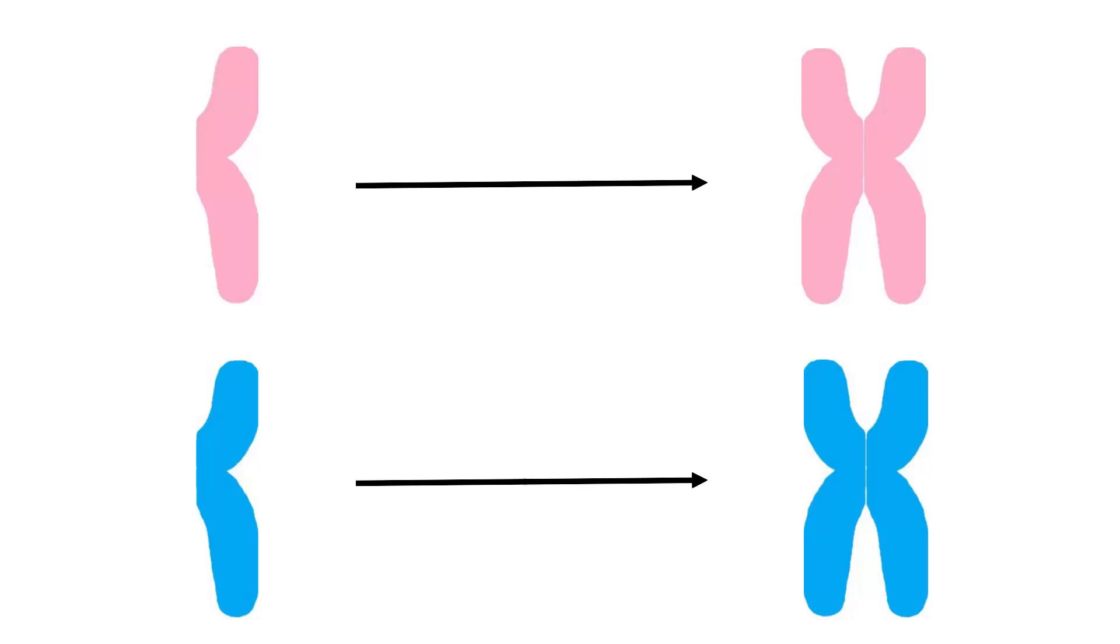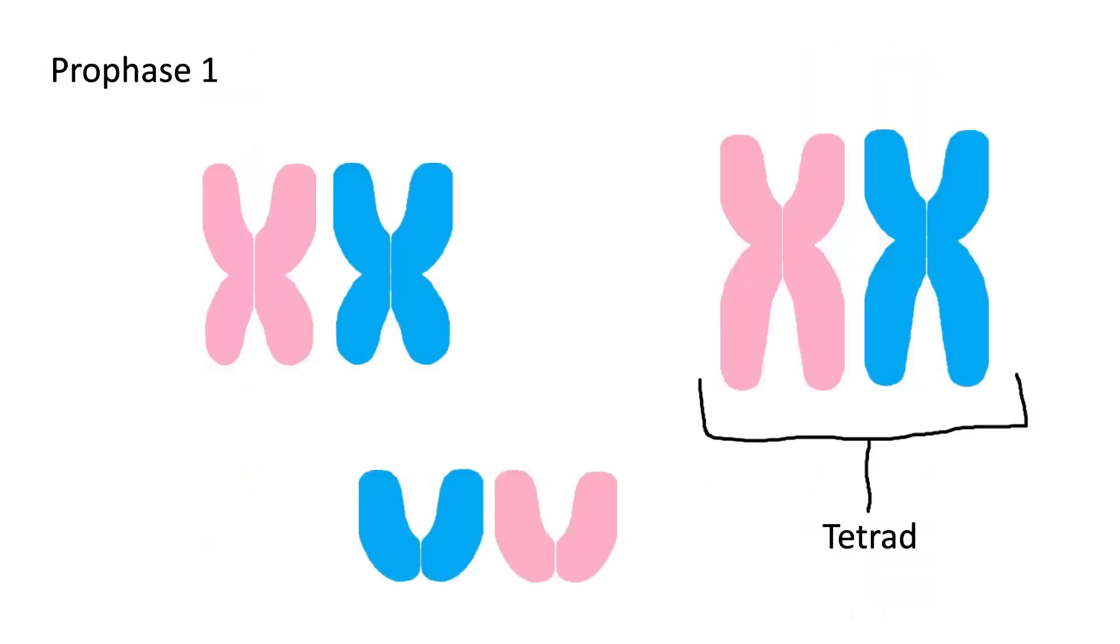Since the end goal for sex cells is 23 chromosomes rather than the normal 46, this means the cell must divide twice. In the first stage of meiosis, prophase I, homologous chromosomes find and pair up with each other to form tetrads.